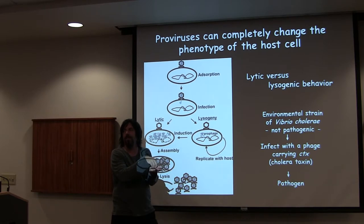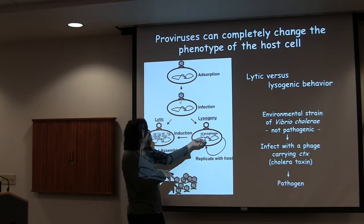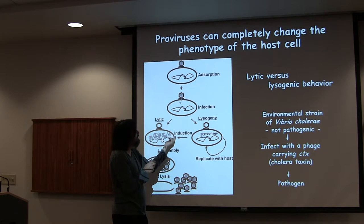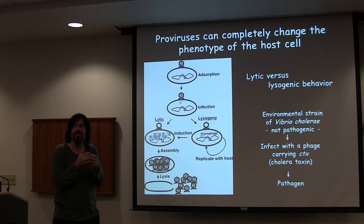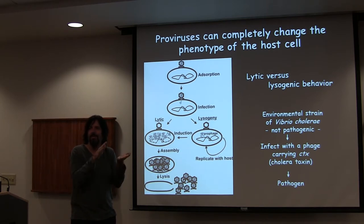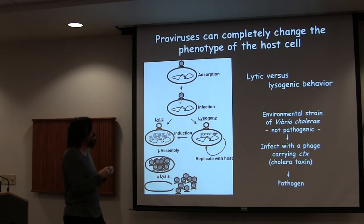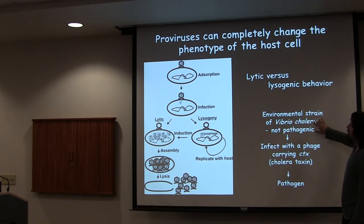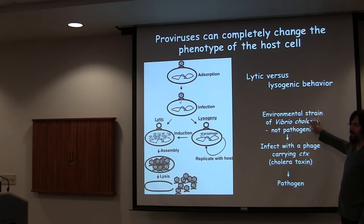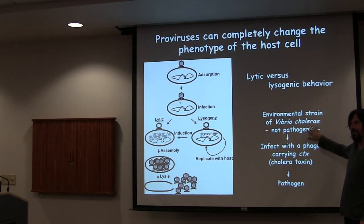Most of the time we think of it as integrating into the host as a provirus, but it can also replicate as a plasmid or as a transposon. Lambda is a classical example. Eventually there's some induction event. The way we'd normally induce in the lab is mitomycin — but carbidox is better now, much cheaper, found by animal scientists studying phages. These things completely change the phenotype of the host: the difference between environmental Vibrio cholerae and the V. cholerae that kills you is only a phage carrying the CTX gene.